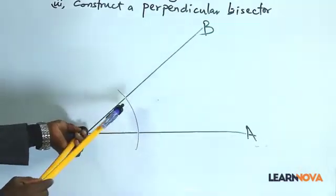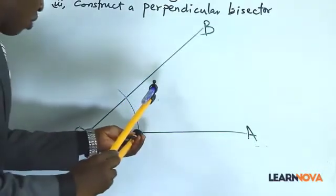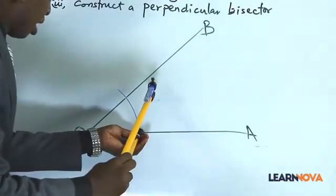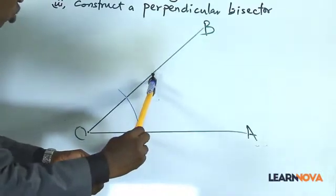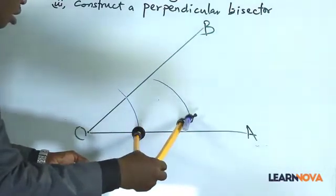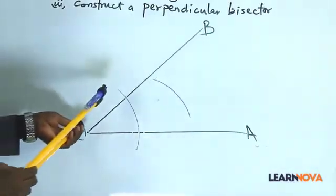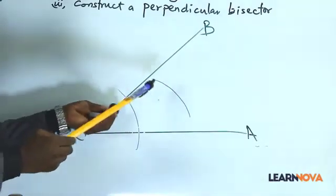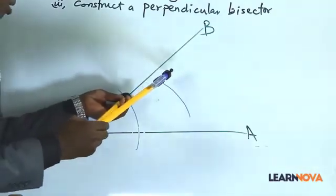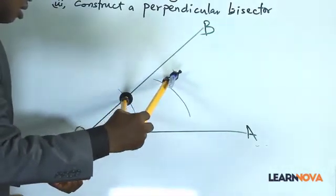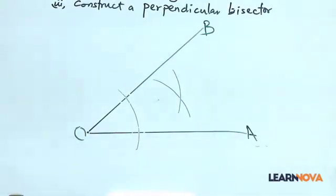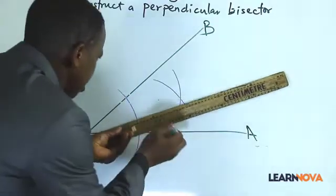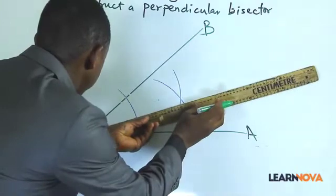Now, when that is done, remove your compass. Go to the point where you have A, line OA, where the stroke cuts line OA. And take a stroke. Then go to the point where the arc cuts OB. And take a stroke. When that is done, let us join this point that is created. We join it back to the origin.